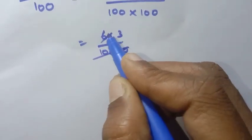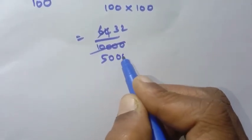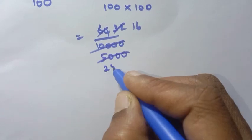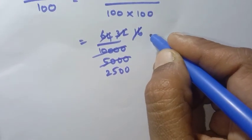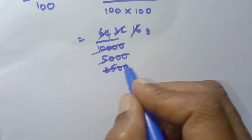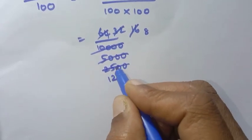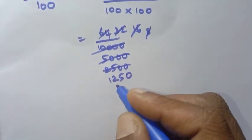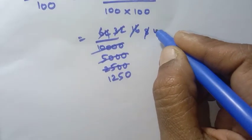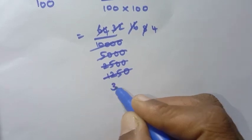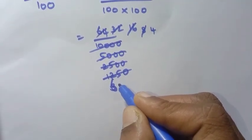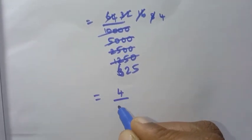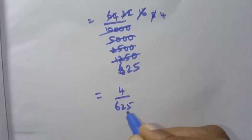Simplifying 0.64 percent: multiply numerator and denominator to clear decimals. Working through the multiplication — 2 twos are 4, 2 fives are 10; 2 sixteens, 2 twos are 4, 2 fives are 10; 2 eighteens, 2 ones are 2, 2 twos are 4, 2 fives are 10. After 4 steps, we get 1.04 result. Further simplifying: 4 by 6 by 25. So simplify to get 4 by 625. That is the fraction.